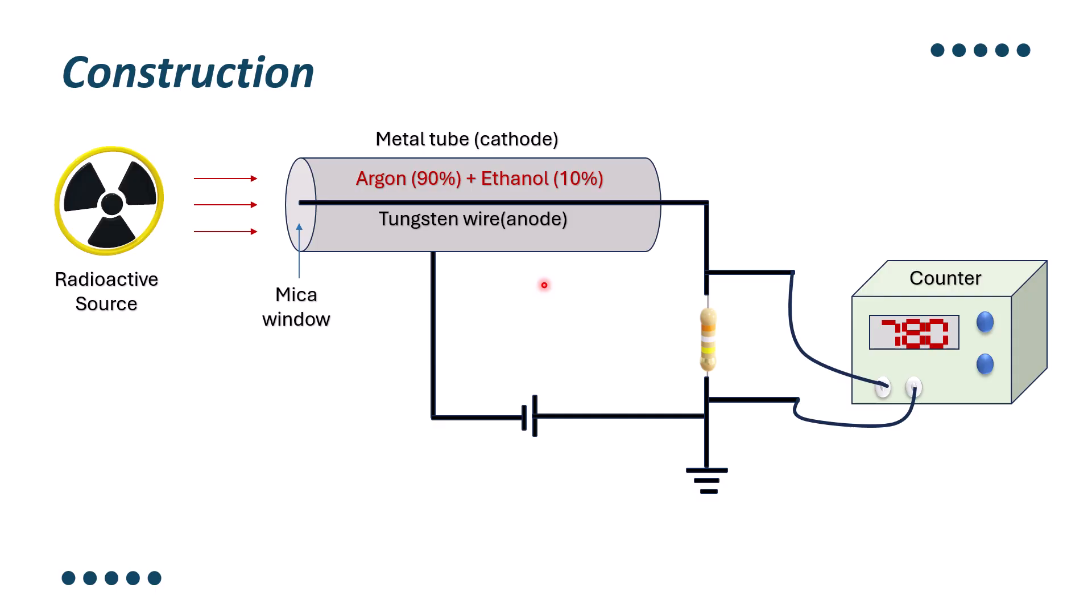After the tube has been evacuated, a mixture of 90% of the argon at 10 cm pressure and 10% of the ethanol is powered into it.